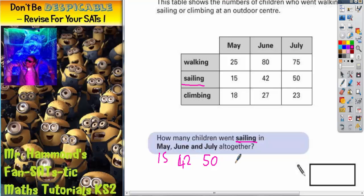Altogether means we need to add them and find the total. I wouldn't recommend doing this in our head, so let's do a column method: 15 plus 42 plus 50. Quick column method: 5 plus 2 is 7, plus 0 is still 7. 1 plus 4 is 5, plus 5 again is 10.